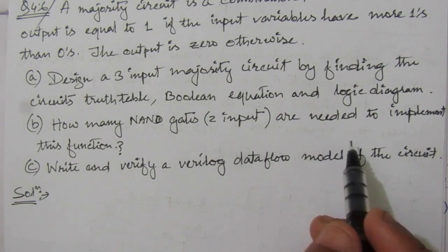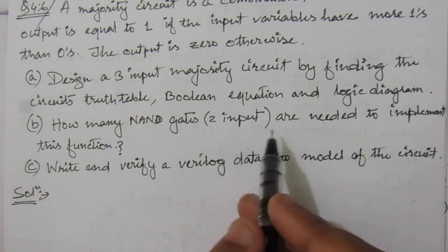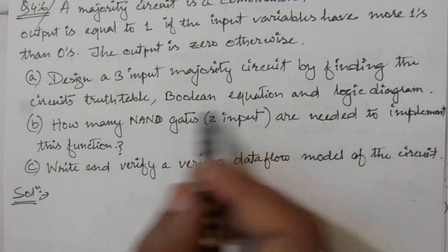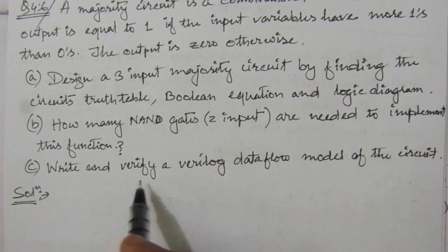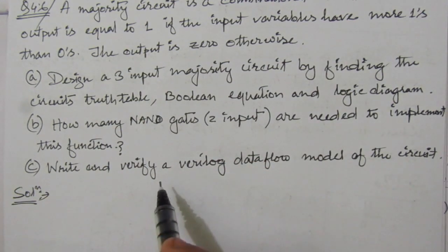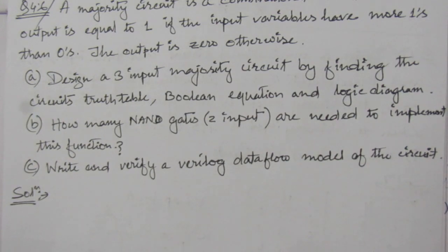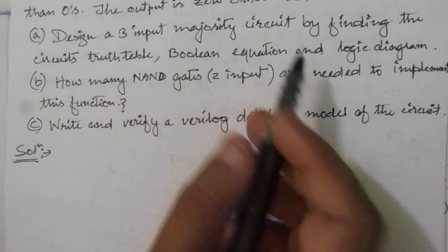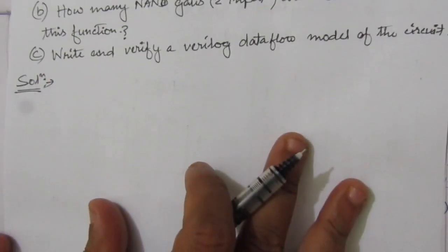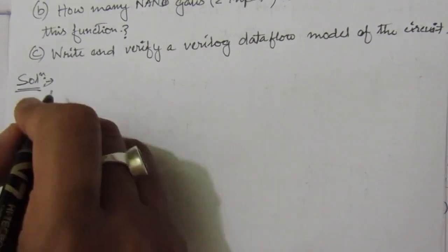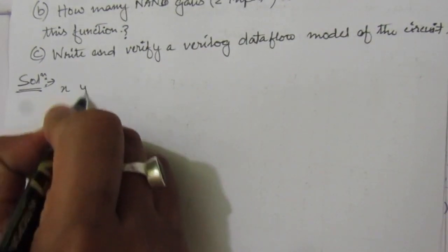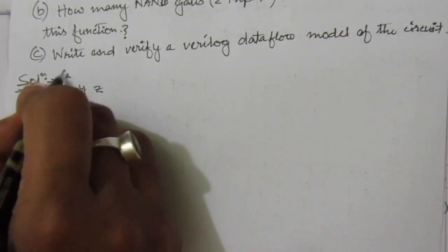We have to find how many 2-input NAND gates are required to implement this Boolean function. In the third part, we have to write a Verilog data flow model — that means a Verilog gate-level description of this circuit. Now let us solve this problem. In Part A, we have to find a 3-input majority circuit, so we will have 3 inputs: let the inputs be X, Y, and Z, with output function F.